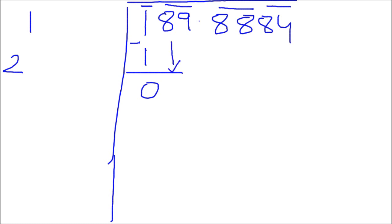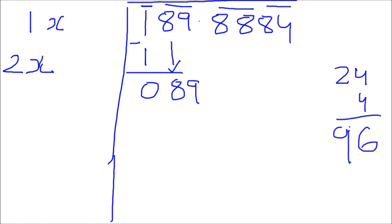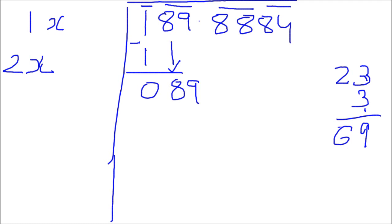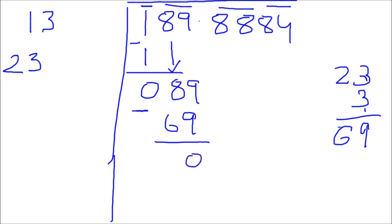Bring 89 down, giving us 289 to work with. Guess any number X such that 2X times X is less than or equal to 89. If I guess X to be 4, that makes 24, and 24 times 4 gives 96, which is greater than 89 — so discard 4. Try X equal to 3: 23 times 3 gives 69, which is less than 89. So X is 3; write 3 in the answer and replace X. Subtracting gives remainder 20.